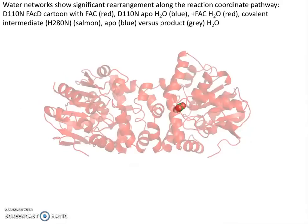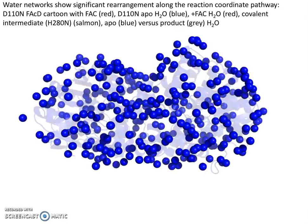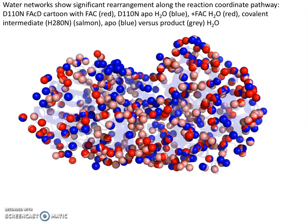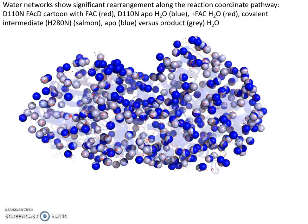Distinct changes in the positioning of bound waters are seen to shift from the substrate-free, to the Michaelis intermediate, to the covalent intermediate, to product-bound states, suggesting that water networks are playing a role in switching the enzyme from one functional state to the next.